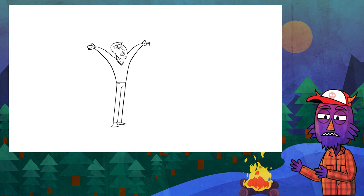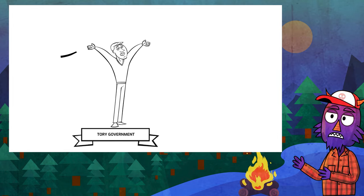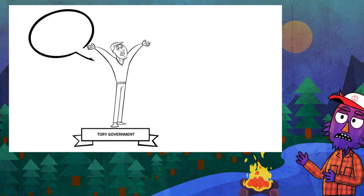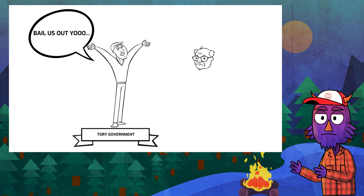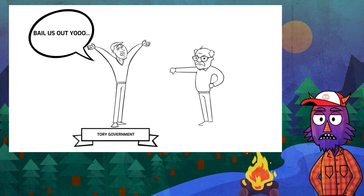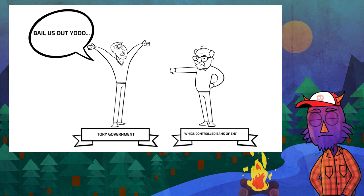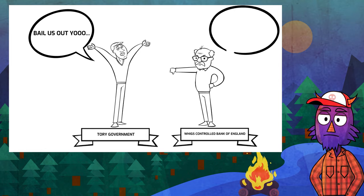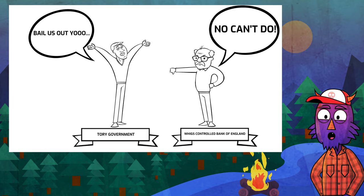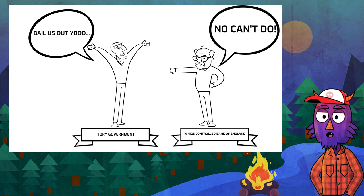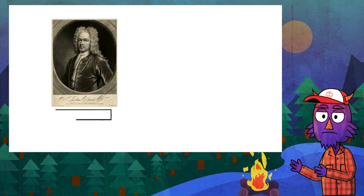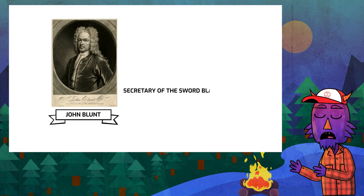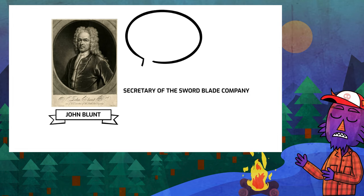The Bank of England was controlled by the Liberal Whigs, which was not on good terms with the Tory government. So the Whigs kept blocking every legislation that came from the opposing Tories. As a result, the House of Commons could not come to terms with allowing the Bank of England to lend money to the government. This is when Harley turned to Sir John Blunt for help.